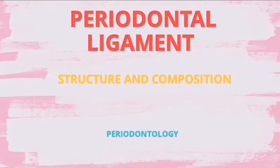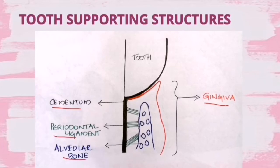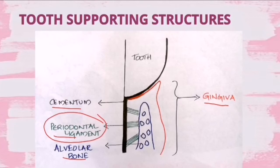Hi everyone, today let's discuss a few things about periodontal ligament from the subject of periodontology. In this session we are mainly going to discuss about the structure and composition of periodontal ligament. Everybody knows the tooth supporting structures - the periodontium. There are basically four components: the gingiva, the cementum, the periodontal ligament, and the alveolar bone. PDL is one among these four tooth supporting structures.